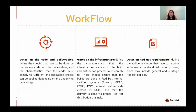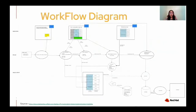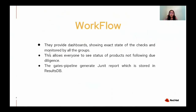Gates on Red Hat requirements define the additional checks that have to be done in the overall build and distribution process, which may include general and strategic Red Hat policies. This workflow diagram depicts the working scenario of gate checks implementation. There are different Jenkins pipeline and jobs set up for the execution of these gates, which are scheduled to run the appropriate check for that product and produce a JUnit report. These JUnit reports are stored in ResultsDB, and the status of the gate checks can be displayed on a dashboard, which shows the exact state of the checks and can be monitored by all groups. This allows everyone to see the status of products which are not following due diligence.